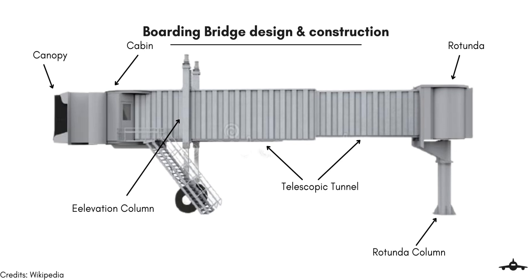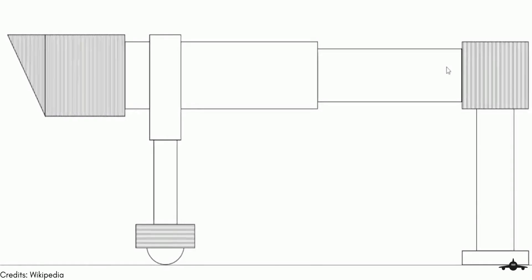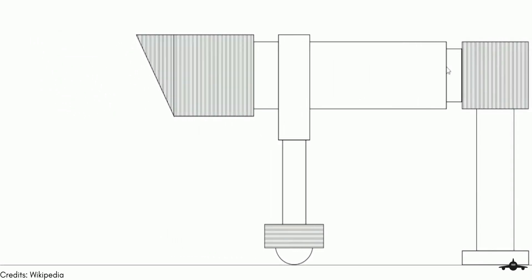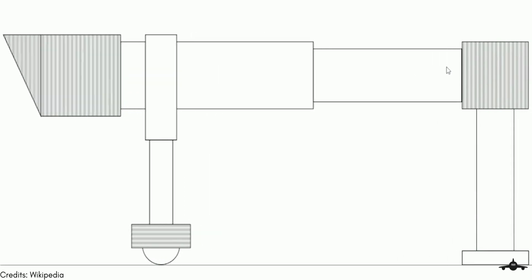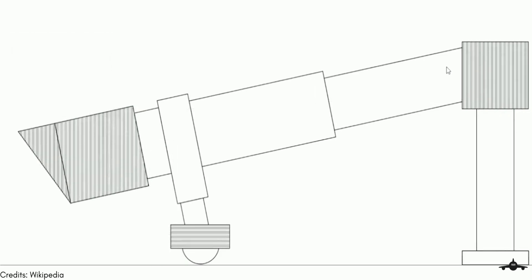Tunnels and cabins are supported by an elevation system of the telescopic column with a bogey wheel for adjustments according to the aircraft. This makes the bridge a mobile structure. The bogey wheel is a motorized system that allows the bridge to move. The boarding bridge is flexible to move in all directions and adjusts according to the aircraft's position on its bay. The whole mechanism moves forward and backwards to adjust itself with the aircraft's distance. The telescopic column allows the boarding bridge to adjust according to the height of the aircraft door of different aircraft, as smaller aircraft have low height and their doors are located close to the ground compared to large aircraft.